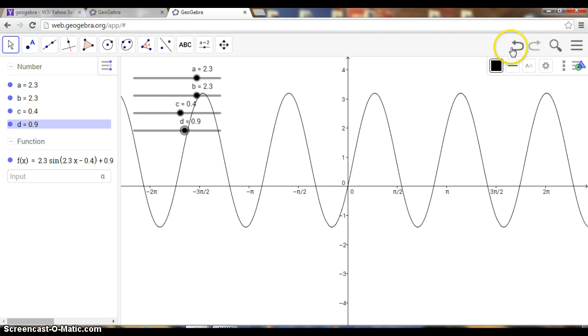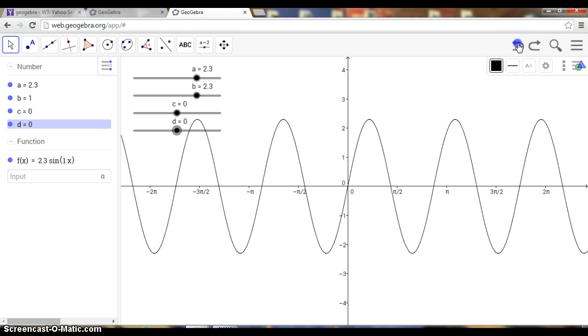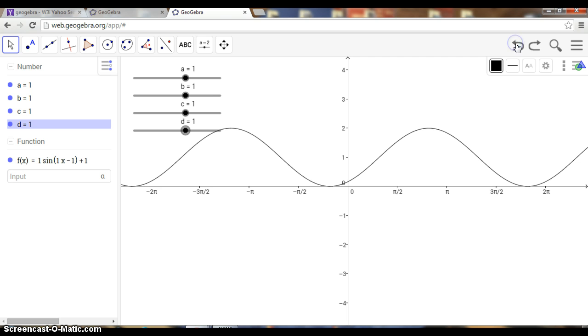If I want to take a look at maybe how the sine graph compares to cosine and tangent, it's real easy to just hit the undo button until we get everything off there we want. I just keep hitting the back button.